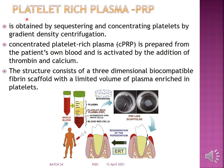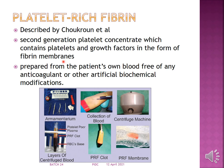Platelet-rich plasma is obtained by sequestering and concentrating platelets by gradient density centrifugation. Concentrated PRP is prepared from the patient's own blood and activated by the addition of thrombin and calcium. Its structure consists of a three-dimensional biocompatible fibrin scaffold with a limited volume of plasma enriched in platelets and growth factors in the form of fibrin membranes.